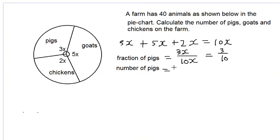We equal that 3 over 10 multiplied by the total number of animals, which is 40. So 10 into 40 is 4. 3 times 4 is 12, so we have 12 pigs.